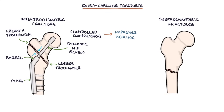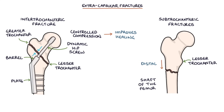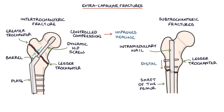Subtrochanteric fractures occur distal to the lesser trochanter, though within 5 cm, affecting the proximal shaft of the femur. These may be treated with an intramedullary nail — a metal pole inserted through the greater trochanter into the central cavity of the shaft of the femur — which holds it in place while the fracture heals.